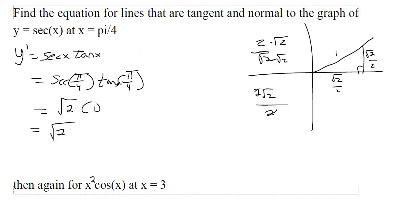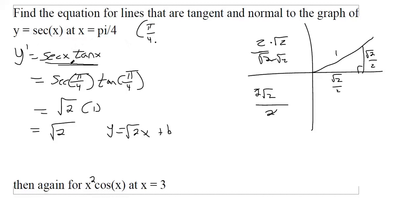We need the equation of the tangent line — we just know what m is. We know y = √2·x + b. To find that y-intercept, we need to plug in an x and a y-coordinate. We have x = π/4, but what's the y-coordinate? Don't plug π/4 back into the derivative — plug it into the original equation. Secant(π/4) is √2, and that's the full point we'd plug in to find b.